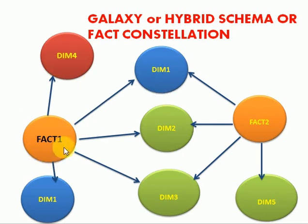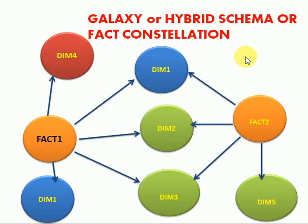Here you can see this diagram. I have multiple facts here and each fact is again surrounded with dimension tables. If you look at one star and if you look at another star, there are multiple stars.